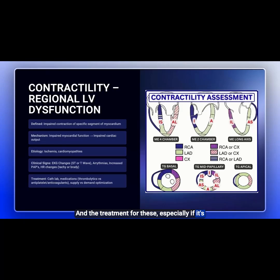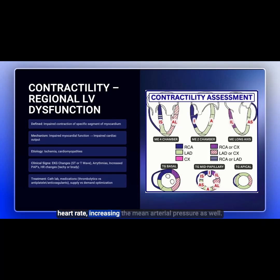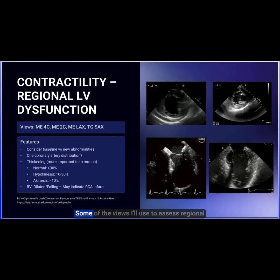The treatment for these, especially if it's ischemic disease, includes going to the cath lab for potential revascularization, medications such as thrombolytics, antiplatelet, or anticoagulant agents, and then optimizing supply versus demand — decreasing the heart rate and increasing the mean arterial pressure as well.